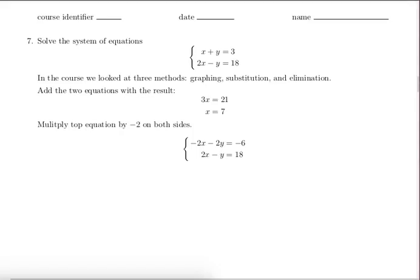Now when we add the two equations, we get a new equation but the x's are eliminated because they add up to 0. We'll end up with negative 3y equals 12, so y equals negative 4. Our solution is x equals 7, y equals negative 4, or the point (7, -4).